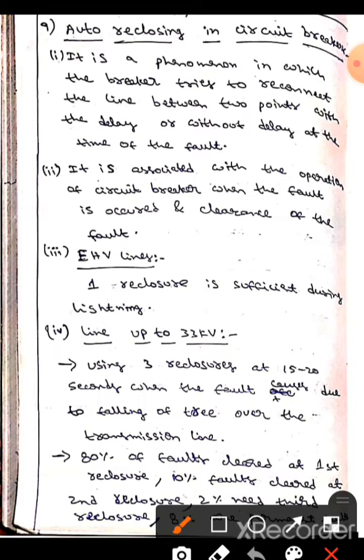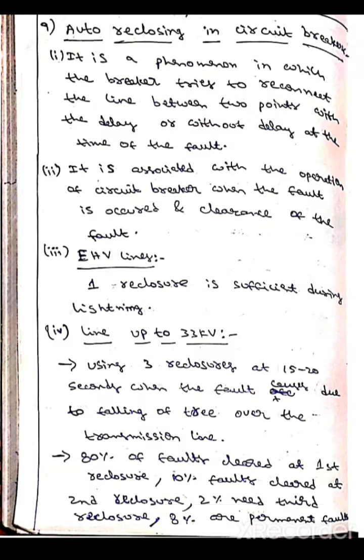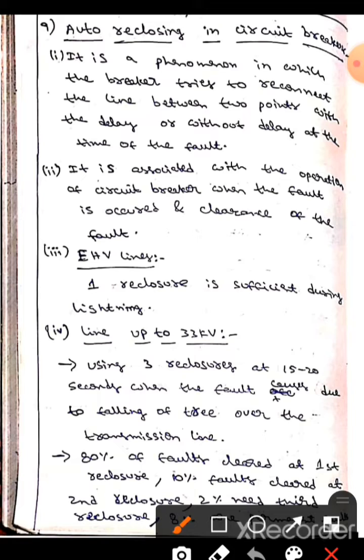Auto reclosing is a phenomenon in which the breaker tries to reconnect the line between two points with or without delay at the time of the fault. This auto reclosing happens with the operation of a circuit breaker when the fault occurs and the fault is cleared.